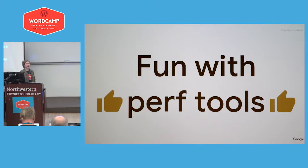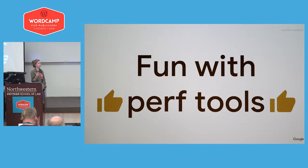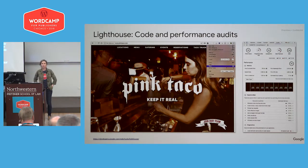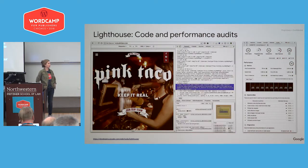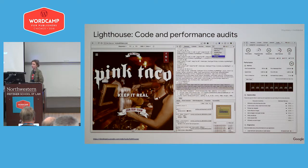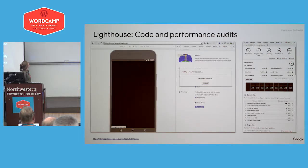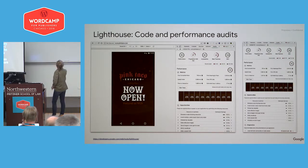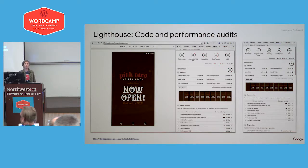I want to dig a little deeper into the data I was just showing you — how you can pull that data yourself for your own site or for other sites. The first tool I want to talk about is Lighthouse. Lighthouse is available in the Chrome browser in Chrome Developer Tools under a navigation menu called Audits. It's a little bit hidden, so you kind of need to know what you're looking for. Once you've found it, you can run an audit on any URL.